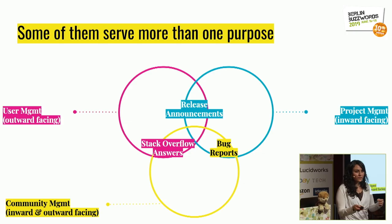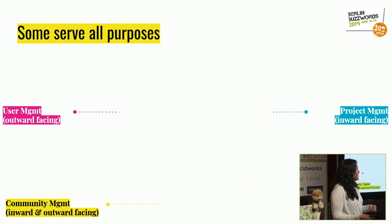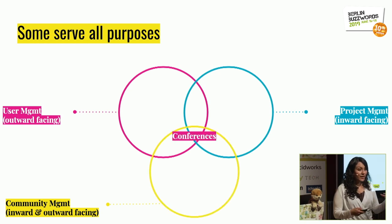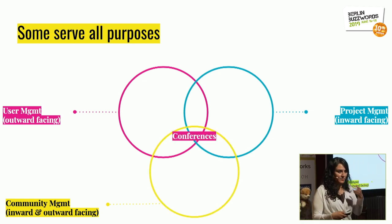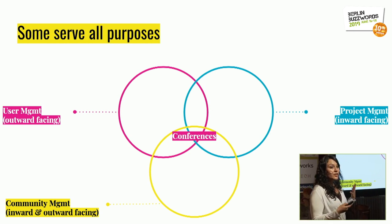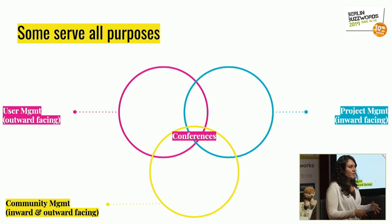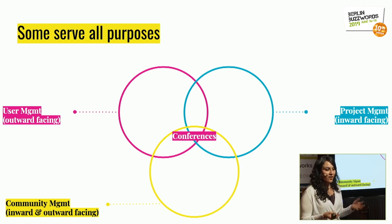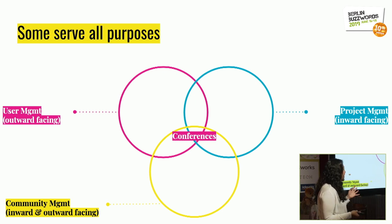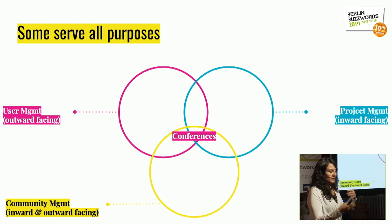And lastly, there are non-code contributions that sit at the intersection of all three types — an example being conferences. Conferences help you do user management because people interested in your technology will attend to hear use cases. They help with community management by creating opportunities to meet people you wouldn't otherwise see in person. And they help with project management — if you want to run a sprint or hackathon, these are great opportunities.